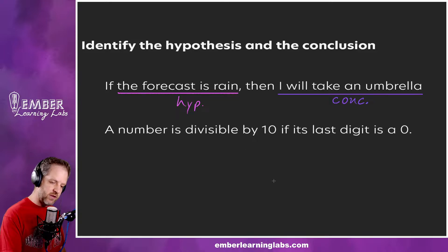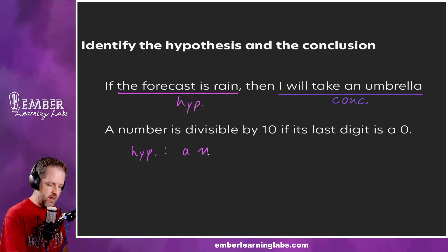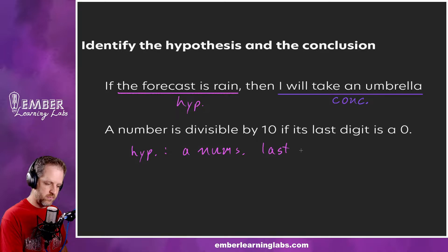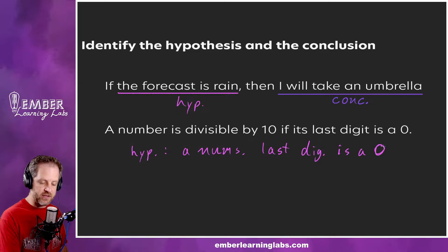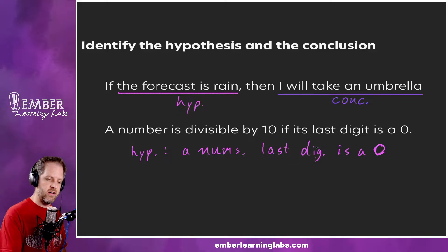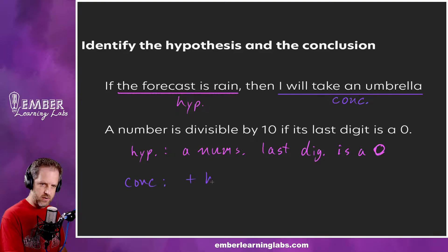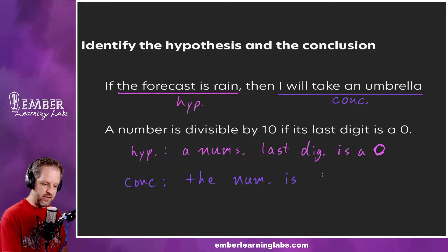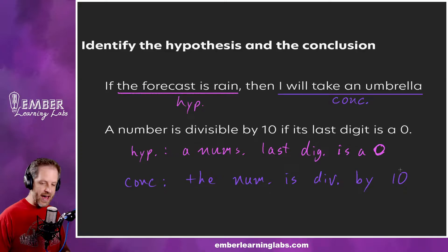For this second statement, we have to rewrite things a bit. The hypothesis would be 'a number's last digit is a zero.' Even though it appears at the end of the sentence, it's still the hypothesis part. Then the conclusion of this conditional statement is 'the number is divisible by 10.' That's the conclusion of that statement.